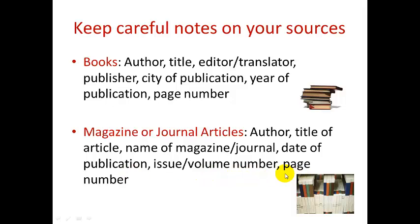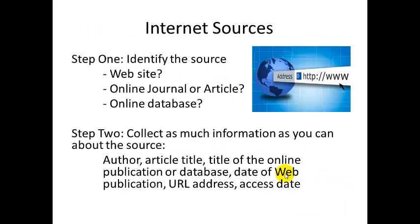Internet sources are a little more complicated because they are so diverse — there are so many different kinds of internet sources. The first step when you are citing an internet source is to make sure that you know what kind of internet source it is. Is it a specific website? Is it an online journal or article? Is it from an online database? Make sure that you can identify what kind of source it is, and that will make it more likely that you will accurately cite the source.